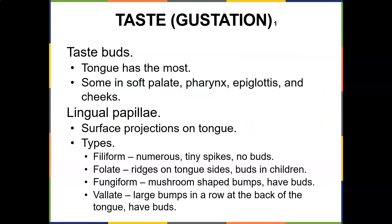Now, taste — gustation. The tongue has the most taste buds, with some in the soft palate, pharynx, epiglottis, and cheek. We taste through lingual papillae, which are surface projections on the tongue. Filiform papillae are numerous tiny spikes but have no buds. Foliate papillae are ridges on the sides of the tongue with buds in children. Fungiform papillae are mushroom-shaped bumps with buds. Vallate papillae are large bumps in a row at the back of the tongue with buds. Check the modules for YouTube video links on how we taste and smell.